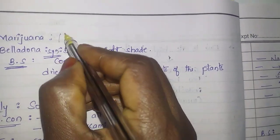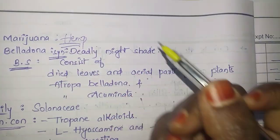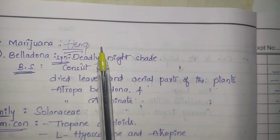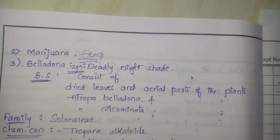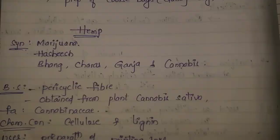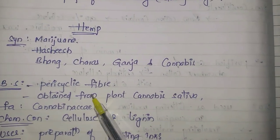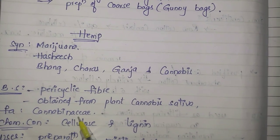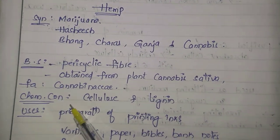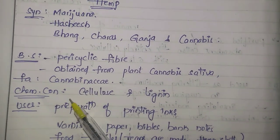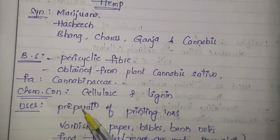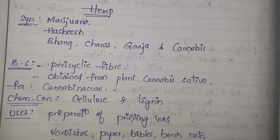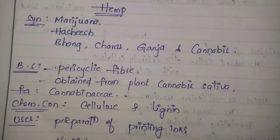Marijuana is also known as hemp. Its synonyms include hashish, bhang, charas, ganja, and cannabis. Biological source: marijuana is extracted from the leaves and flowers of Cannabis sativa, belonging to the family Cannabinaceae. Its chemical constituents include terpenoids, and the main constituent is tetrahydrocannabinol (THC).